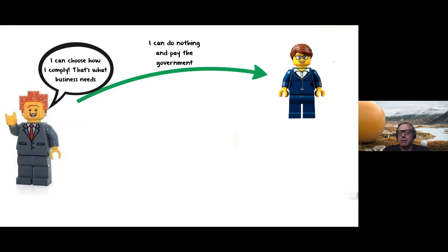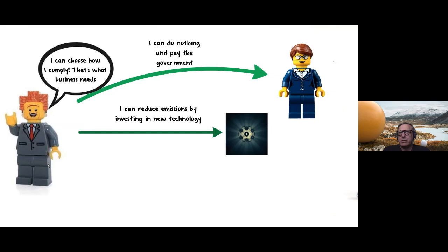The two biggest producers of greenhouse gas emissions in the province historically have been the oil and gas sector and energy production. If you have a compliance obligation in the millions of tons of CO2 equivalent, at $30 a ton that's 30 to 50 million dollars — significant. That high cost is meant to incentivize organizations to invest in new technology to reduce greenhouse gas emissions, so we're seeing shifts away from coal-fired power plants to natural gas and investment in new equipment to reduce methane emissions.